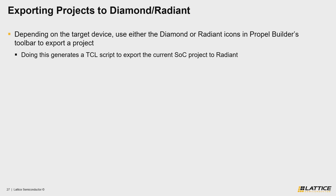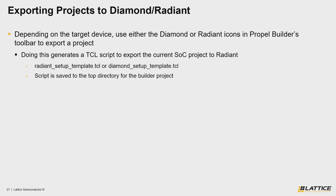For projects that are exported to Radiant, the generated TCL script will be called Radiant_Setup_Template.tcl, while for Diamond projects, the generated script will be called Diamond_Setup_Template.tcl.